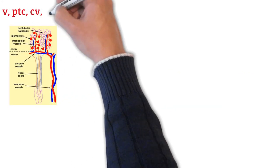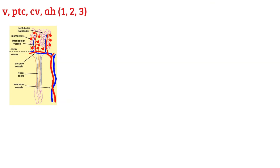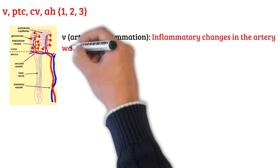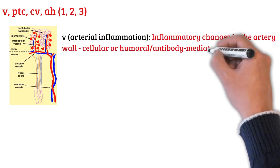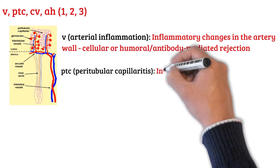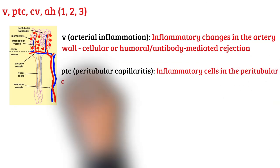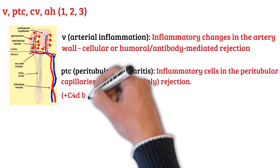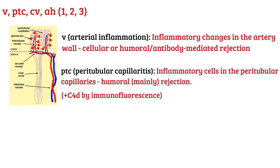The fourth component in the Banff classification is the vasculature, which has four codes: V, PTC, CV, and AH. V stands for arterial inflammation, representing the presence of inflammatory changes in the arterial wall, which can be seen with humoral rejection. PTC stands for peritubular capillitis, representing the presence of inflammatory cells in the peritubular capillaries, also seen with humoral rejection. By immunofluorescence, the C4D will be positive.